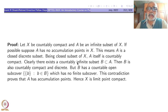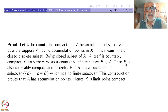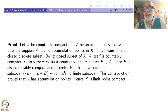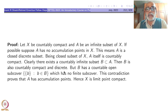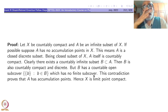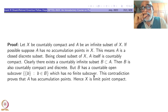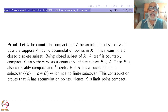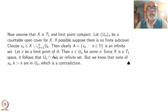Being a closed subset of X, A itself is countably compact — just as closed subsets of a compact space are compact, the same proof works. There exists a countably infinite subset B of A, since we started with an infinite subset. Then B is also countably compact and discrete. But B has a countable open cover {b} for b in B — since it is discrete — which has no finite subcover. That is a contradiction, so any infinite set must have a limit point if X is countably compact.